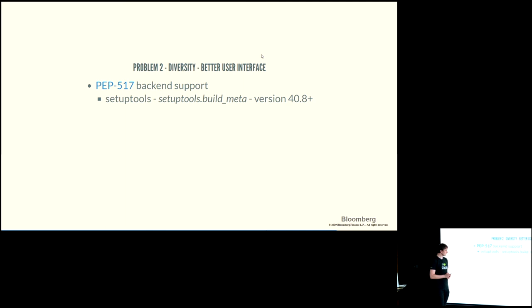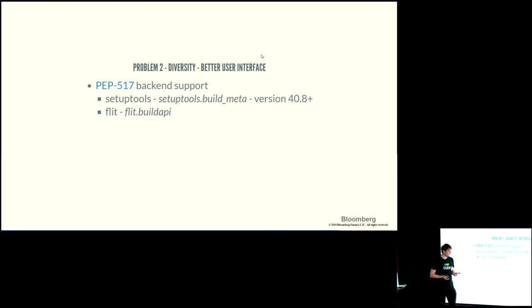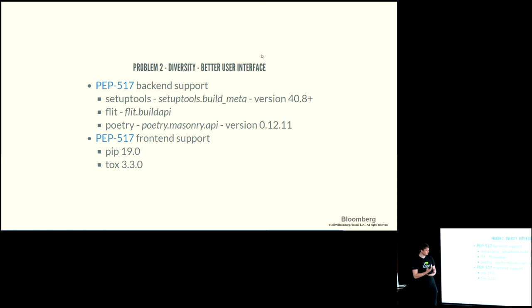Various back ends started adopting this new interface: setuptools provides it from version 40.8, flit provides it from very early on, and poetry is another builder that's supported it for a long time. On the front end side, pip 19 already comes with PEP 517 support, so if you have pip 19 you can use any of these back ends and your builds are guaranteed to never have bad build dependencies — unless you specify them incorrectly.